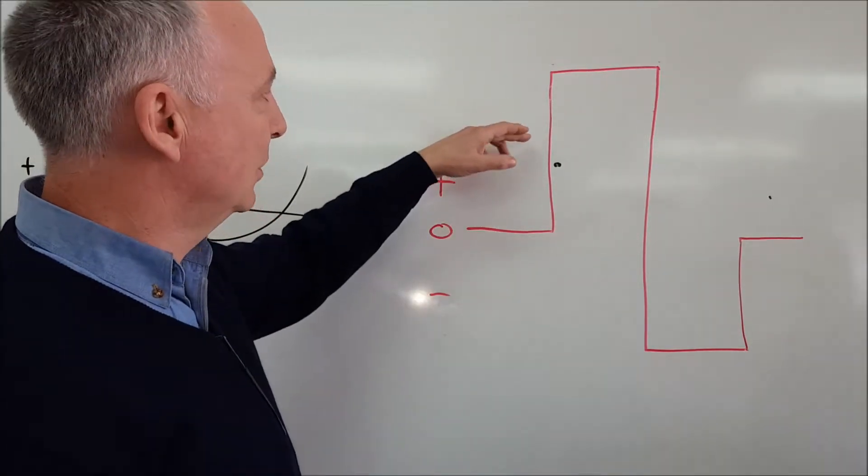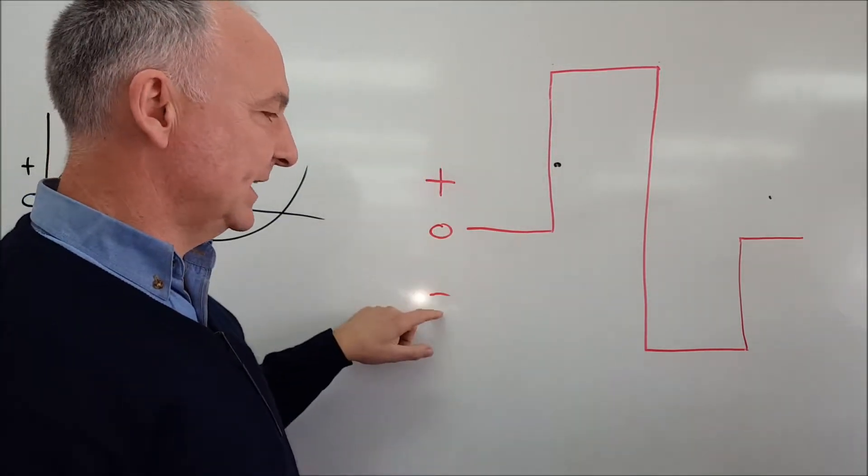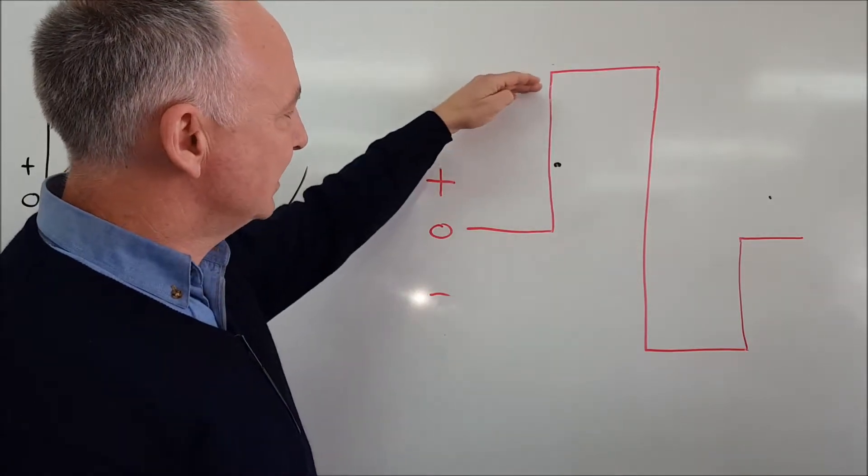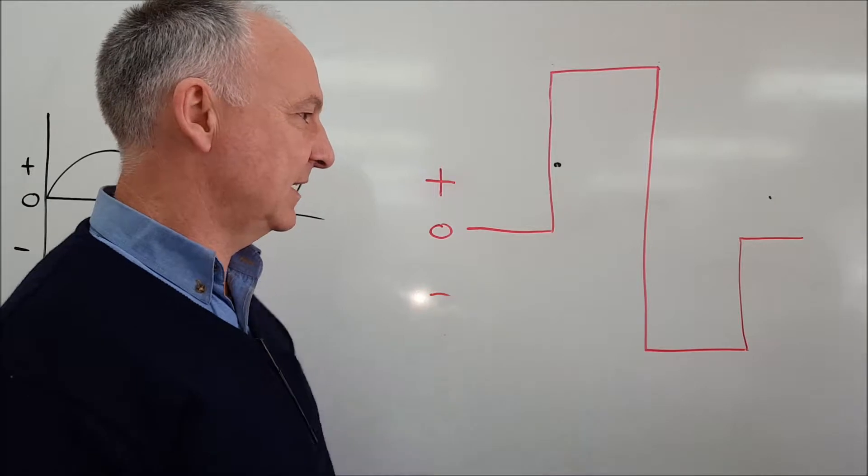So what we can do is reduce or increase the positive or negative half cycle. By reducing the positive half cycle, we in turn increase the negative half cycle.